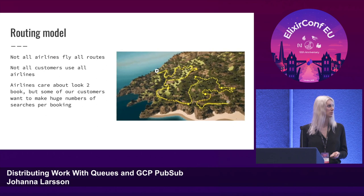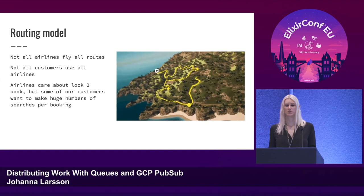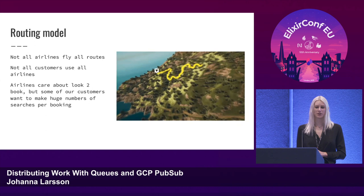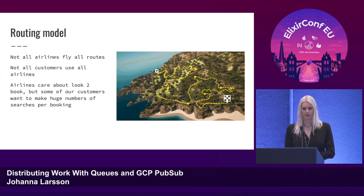Not all airlines fly all routes, and not all customers use all airlines. Airlines care a lot about what's called look-to-book in the industry — how many times you searched before you actually booked something. It's obvious why they care: they're producing 40 megabytes of XML for every search and need really big servers, putting a lot of money into producing these results.